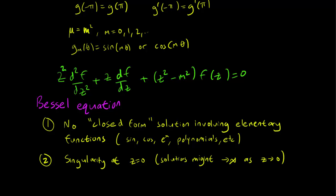Secondly, this differential equation has what we call a singularity at z equals 0, and this means that solutions to the Bessel equation might go to infinity as z approaches 0. I don't think that you have encountered any differential equation of these properties unless you have had a very advanced differential equations course.